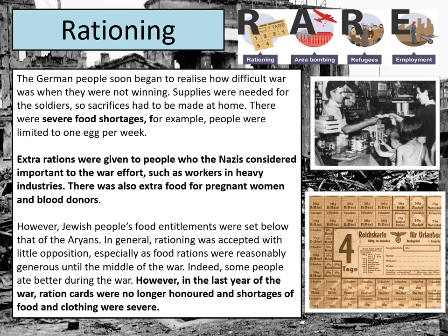Supplies were really needed for soldiers fighting in tough conditions — some in the Russian winter at minus 40 degrees — so German people at home had to make sacrifices. This resulted in severe food shortages; at some points, people could only get things like one egg per week. The Nazis didn't give everybody equal rations; instead, they gave extra rations to those deemed vital for the war effort, such as those working in heavy industry like weapons factories, as well as pregnant women and blood donors.